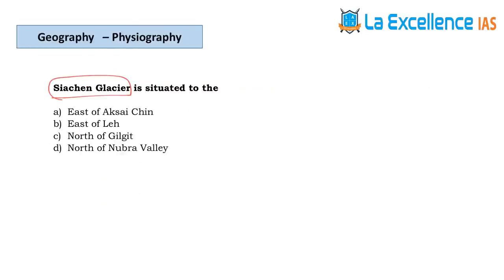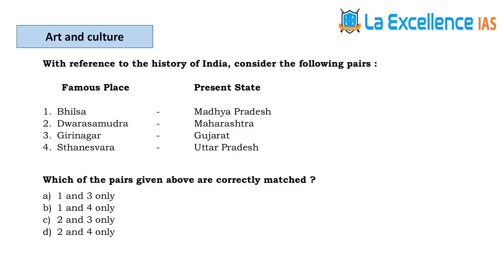The next one about Siachen Glacier is a factual question. It is to the north of Nubra Valley. Since so many LoC violations have happened, it is an expected question to know where Siachen Glacier is located.